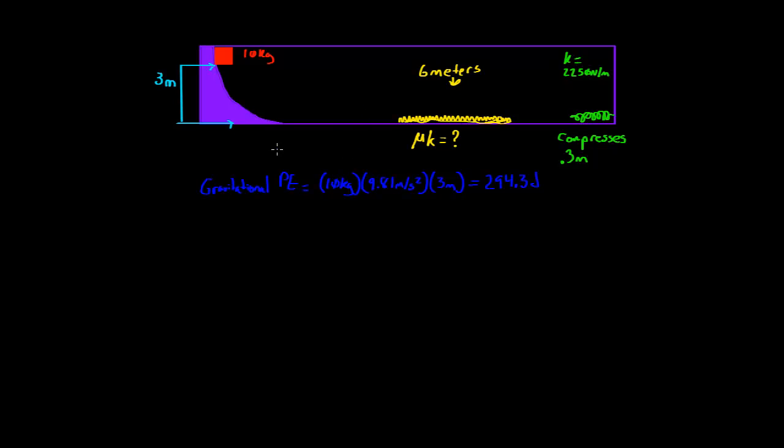So the part we do know is that the block goes through, it makes it through at least initially the first time through this rough patch, and by the time it gets to the spring, it has enough energy left to compress 0.3 meters. So what we should figure out is what was lost. And so we've got to figure out the energy required to compress this spring 0.3 meters.